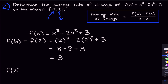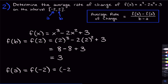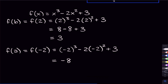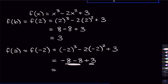Now for f(a), a is negative two, so we plug in negative two everywhere we see an x: negative two cubed minus two times negative two squared plus three. Negative two cubed is negative two times negative two times negative two — that's four times negative two, which is negative eight. Negative two squared is positive four, times two is eight, and with the minus sign that's minus eight. So we have negative eight minus eight plus three, which is negative sixteen plus three, giving us negative 13.